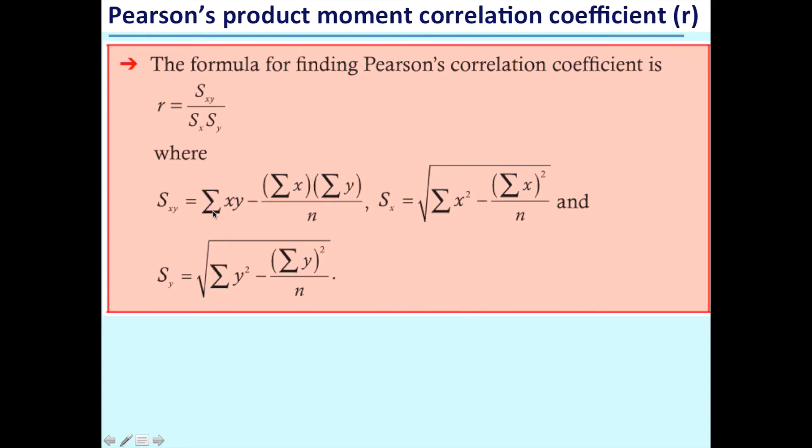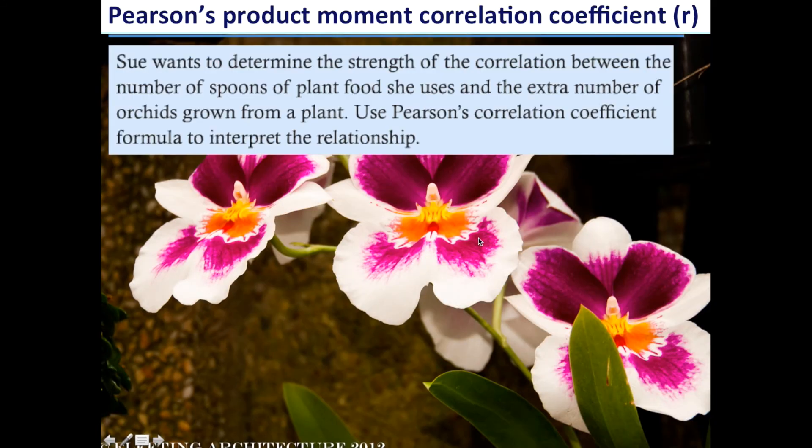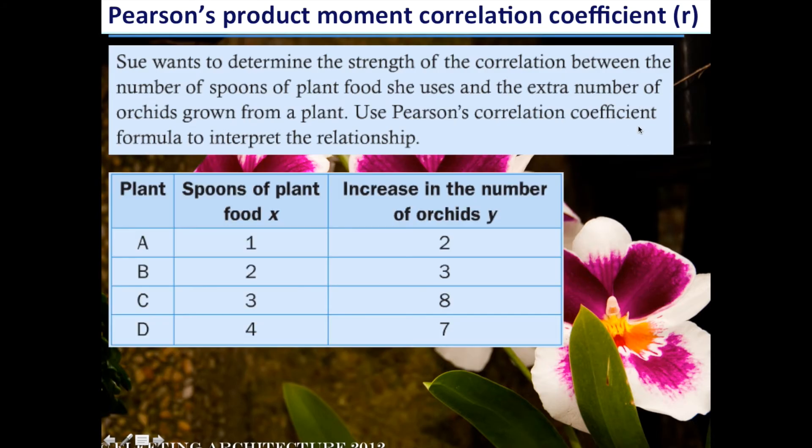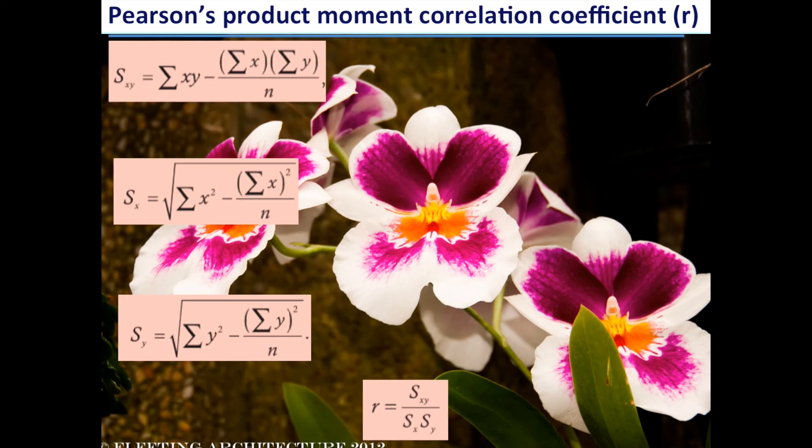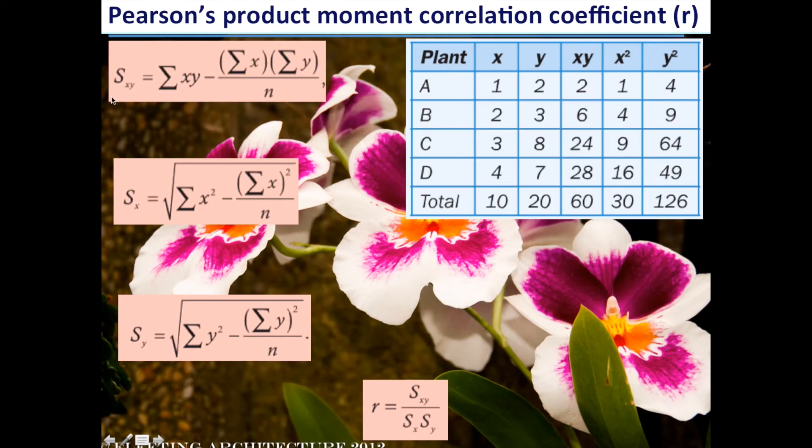The formula to find Pearson's correlation coefficient is denoted r, and we should recognize some of these from the previous section. So r is Sxy over Sx multiplied by Sy, and these are the formulas we can use to find that. Let's have a look at a question. Here we're explicitly asked to use the formula - more realistically we'd use a calculator, but let's look at this example. Here is our independent variable, spoons of plant food, and here is the dependent variable, number of orchids. That's our data, and here are all of the formulas. If you think you're in a position to calculate r, then by all means have a go now, otherwise just follow through.